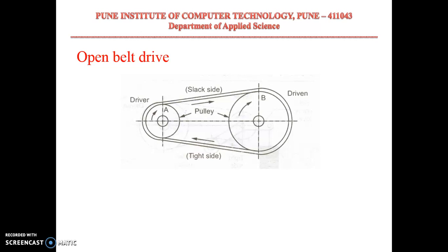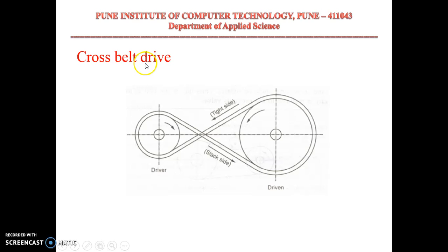Open belt drives are used where two shafts are parallel and rotating in the same direction. For the driver pulley rotating in a clockwise direction, it will pull the belt at the bottom and deliver it to the upper side. That is why tension in the lower side will be more than the tension in the upper side — the lower side is called the tight side of the belt, and the upper side is called the slack side of the belt.